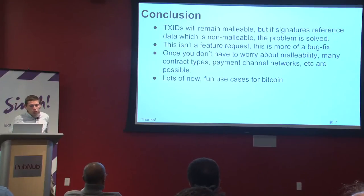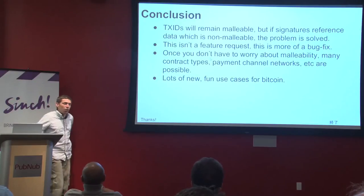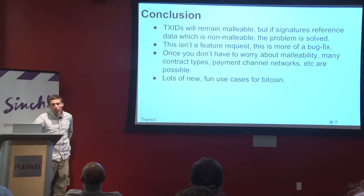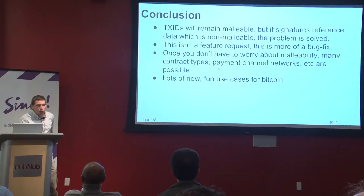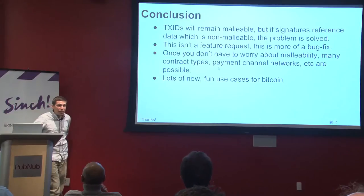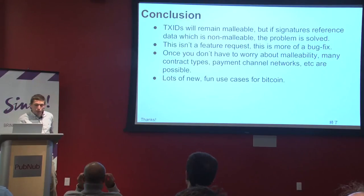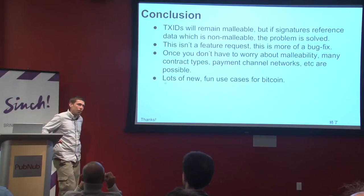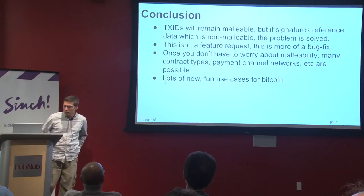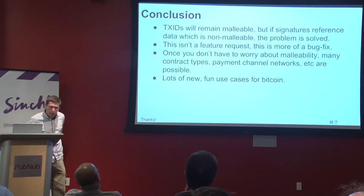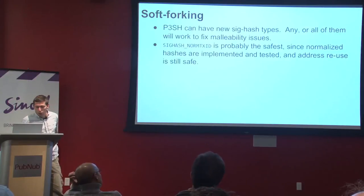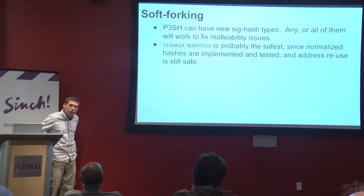In conclusion: TX IDs will remain malleable. The real problem is a second-party attack, not a third-party attack, and there's no way around it — Bob can always resign with a new k value. But if your signatures reference data which is not malleable, the problem is essentially solved. You can't solve output malleability, so you make your inputs equally malleable. This isn't really a feature request, it's more of a bug fix. My proposal is a SIGHASH_NORM_TXID. Once you don't have to worry about malleability, there are really cool things you can do: contract types, payment channel networks, and all sorts of interesting stuff that people have been thinking about for a while but that really break hard because of malleability.